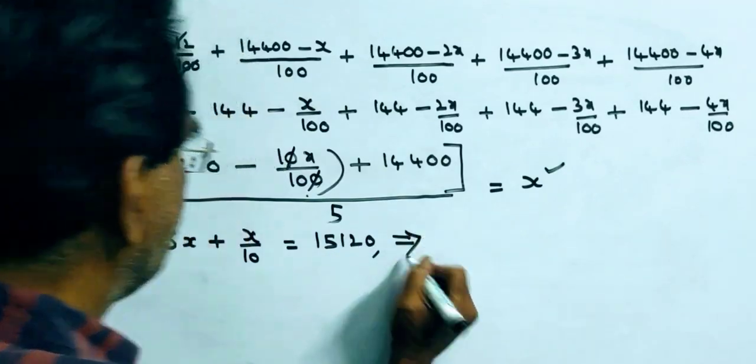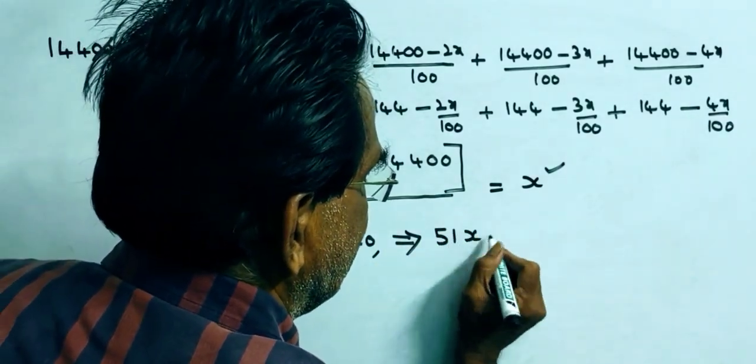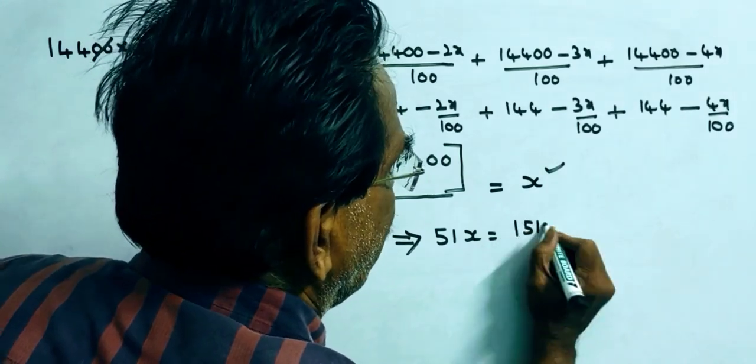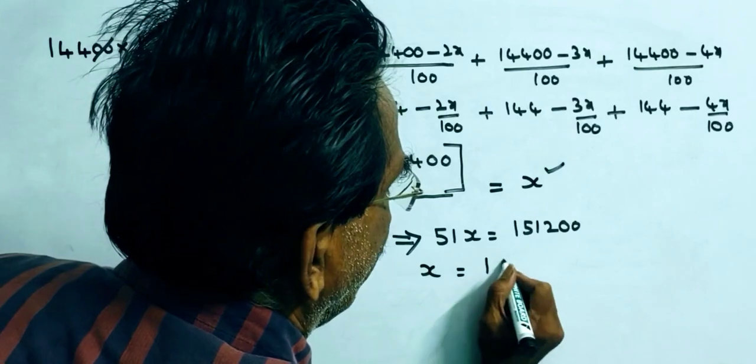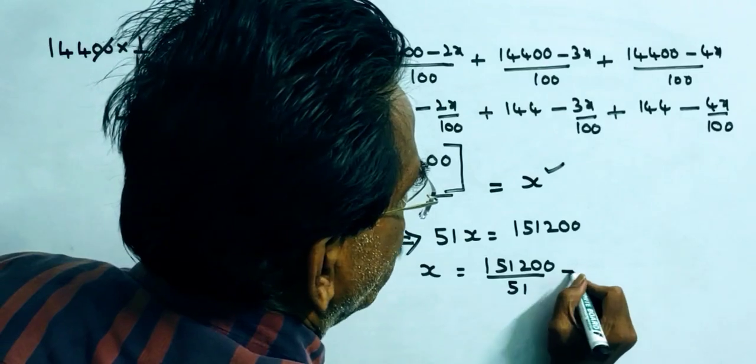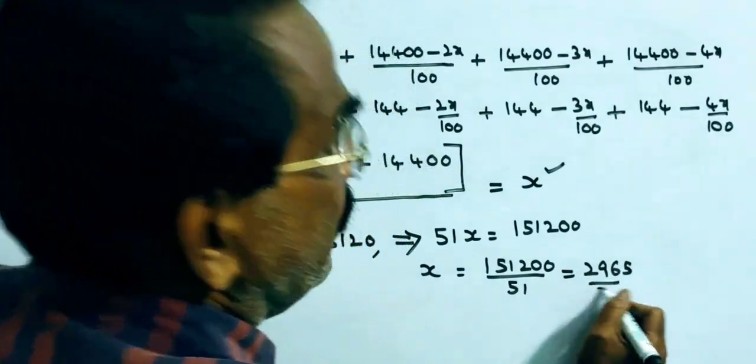So x equals 15,200 divided by 51, which comes to approximately 2,965 rupees.